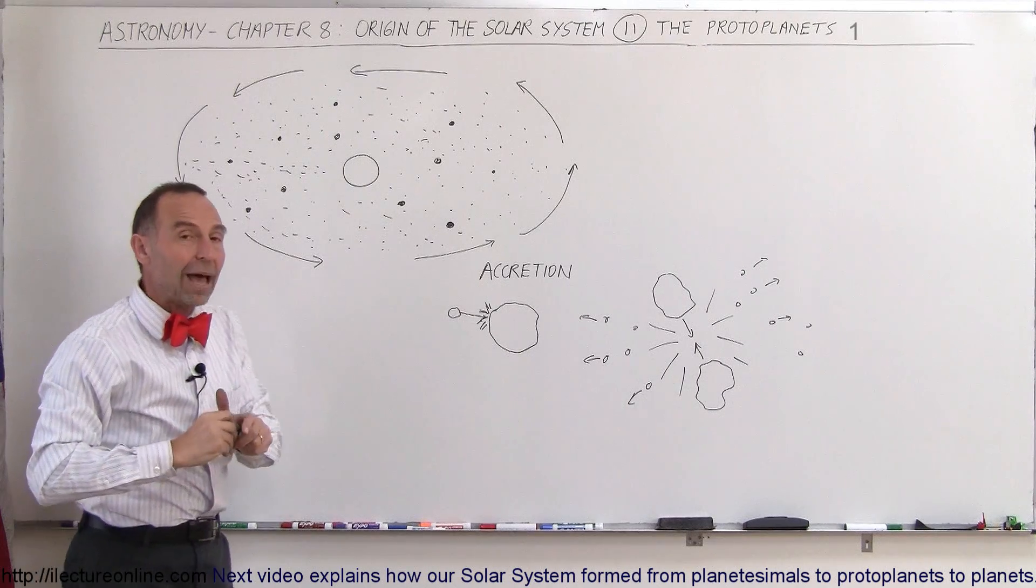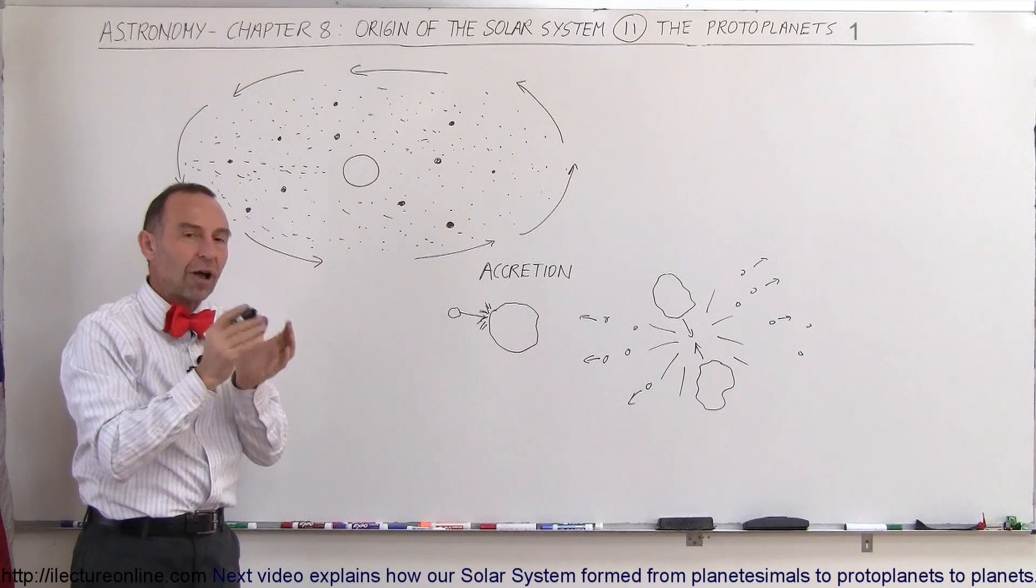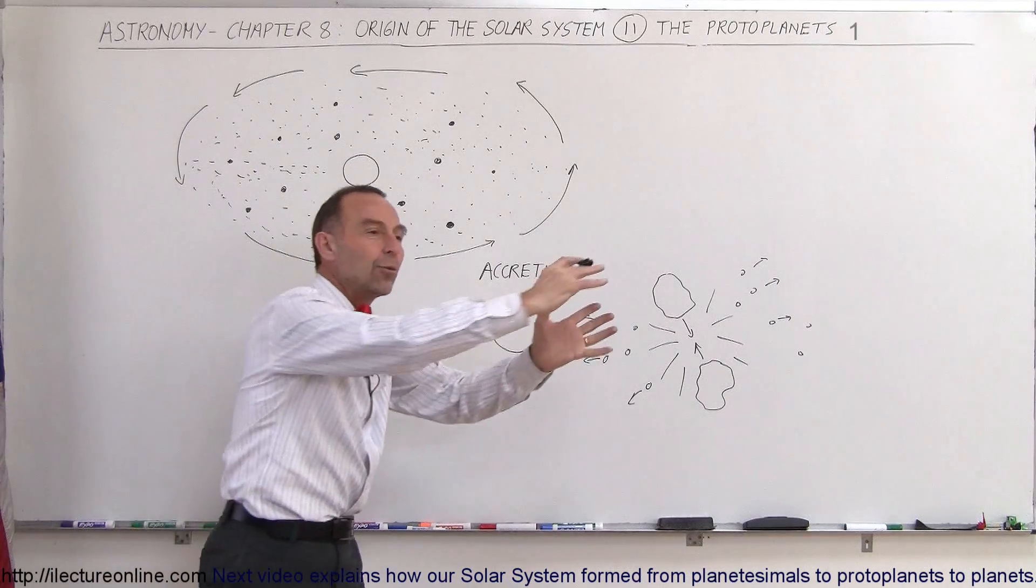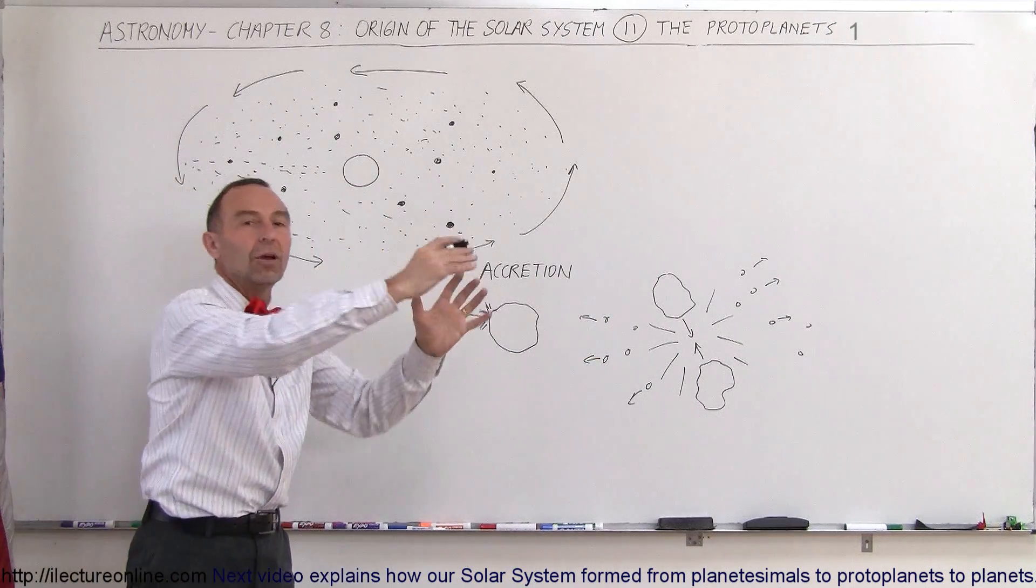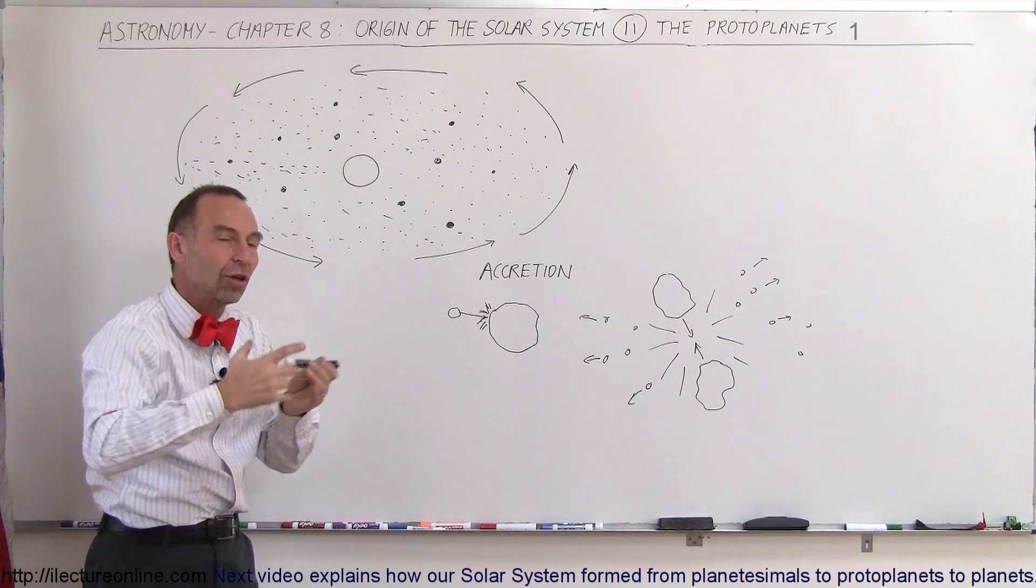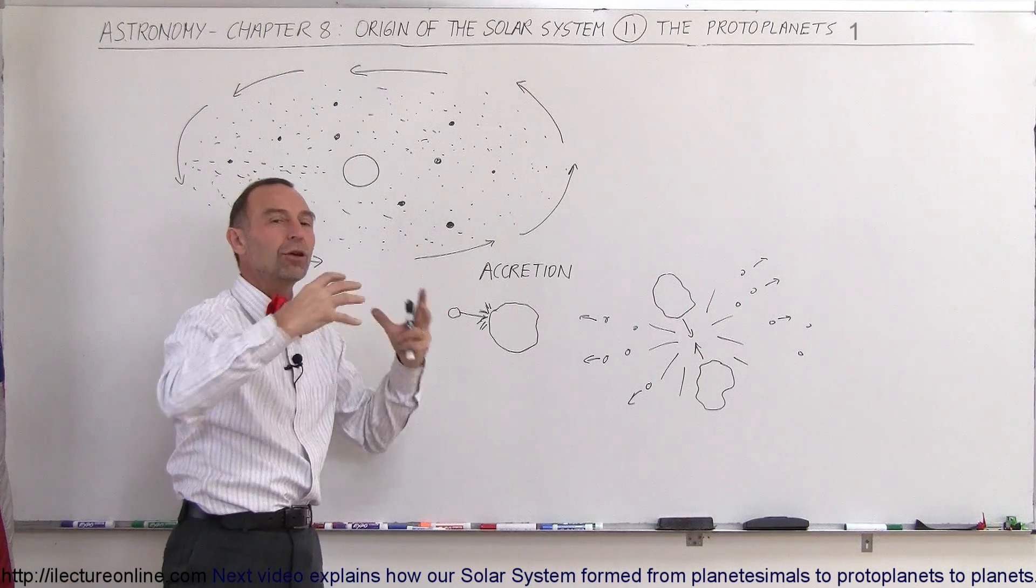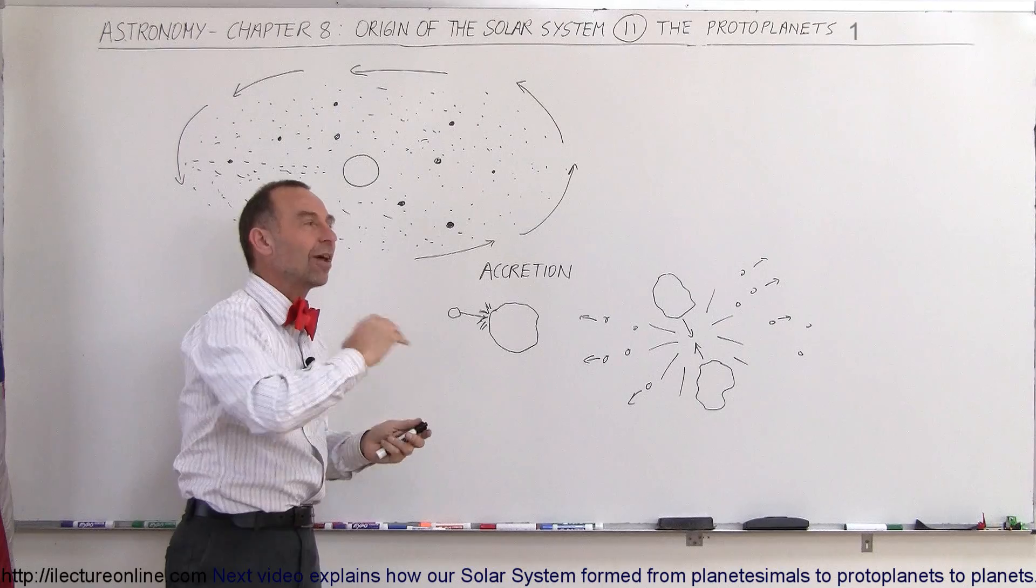And what seems to then also happen is that they began to space each other out so that any large object would begin to clean out a region, a path within that emerging solar system because gravitationally would have enough attraction to take anything that's close by and pull it in and so slowly grow in size and mass as the time went on.